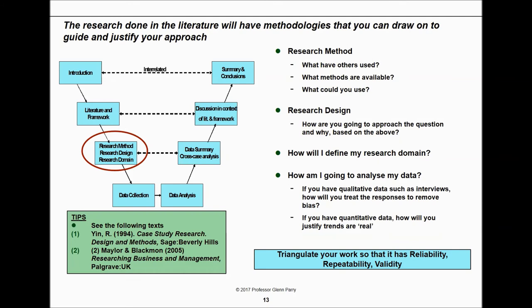Your research method is all about what you're going to do and how you're going to do it. You need to understand the methodologies available, why you're taking a particular approach, and how you're going to design it. Are you using surveys, questionnaires, or experiments — and why is that appropriate for this space? You don't use a ruler to measure a quantity of liquid; in social sciences it's the same — you must use appropriate instruments. Look at what others have used, which methods are available, how you'll define your research domain, and how you'll analyze your data once it's collected.